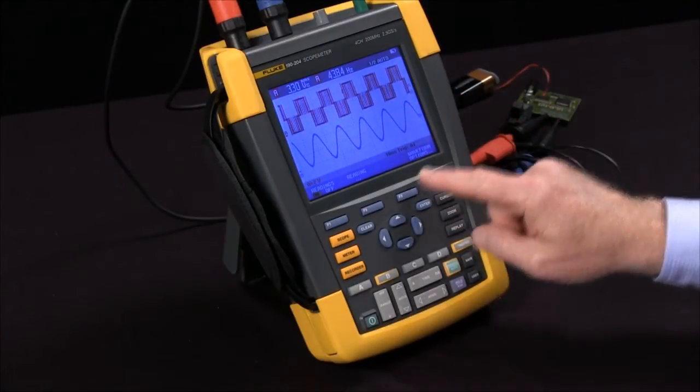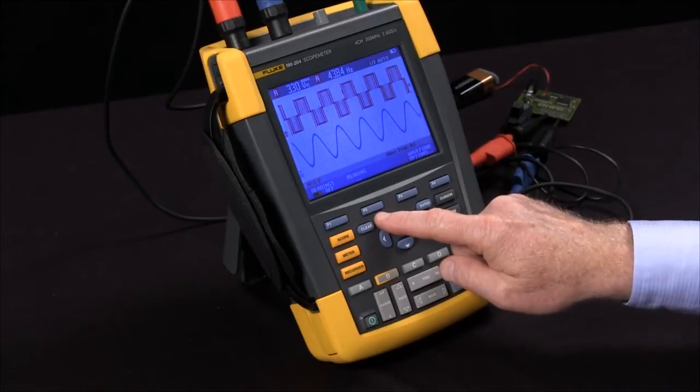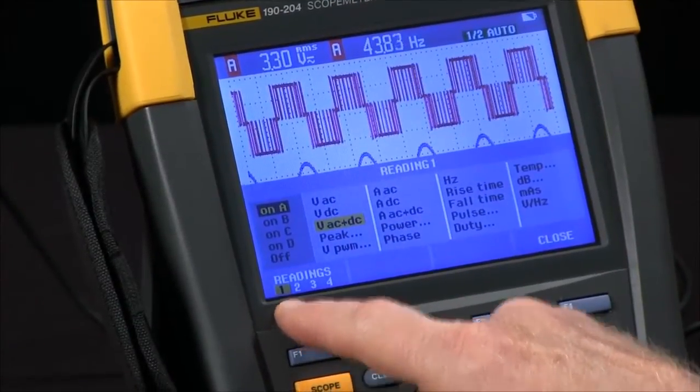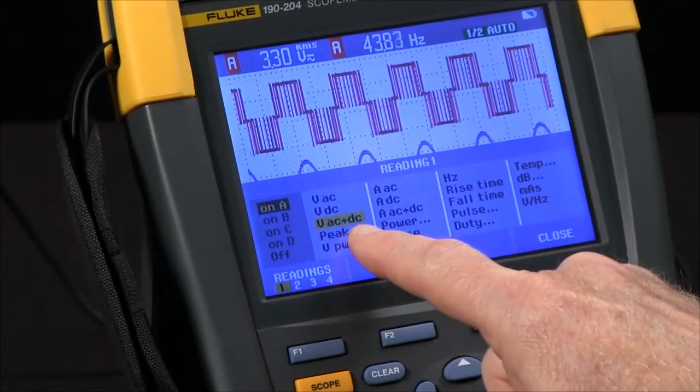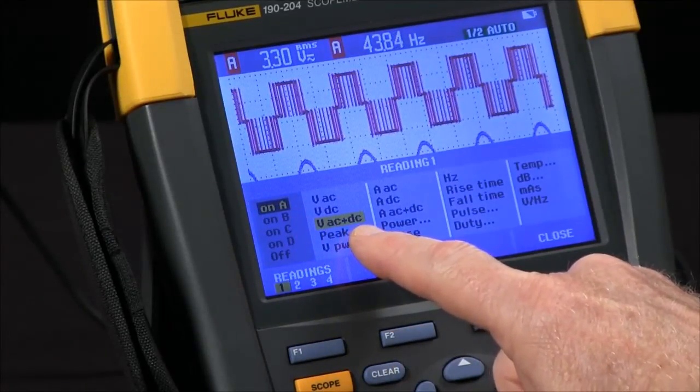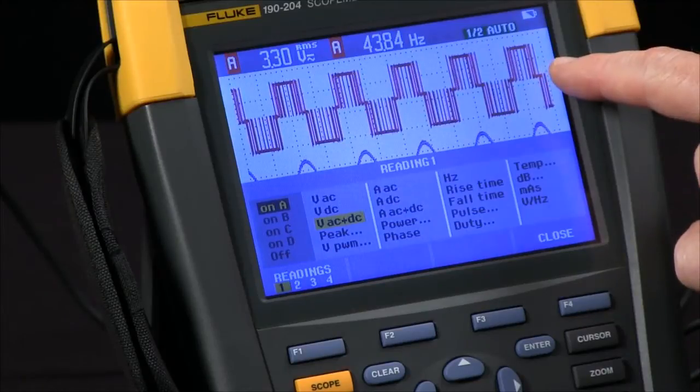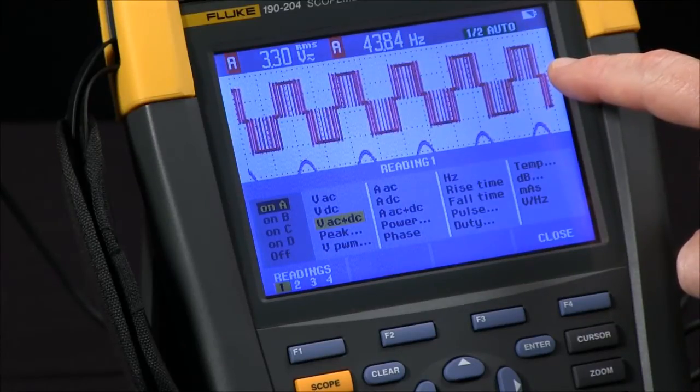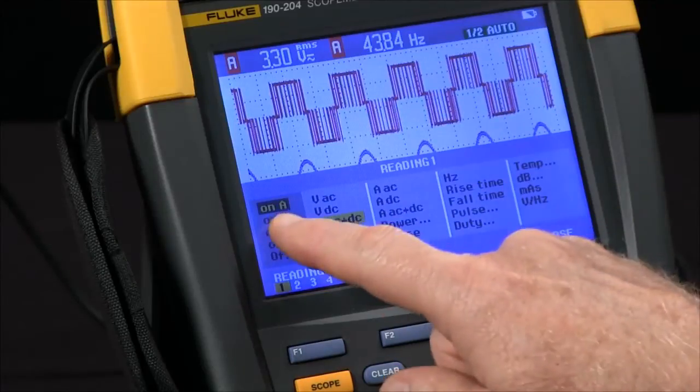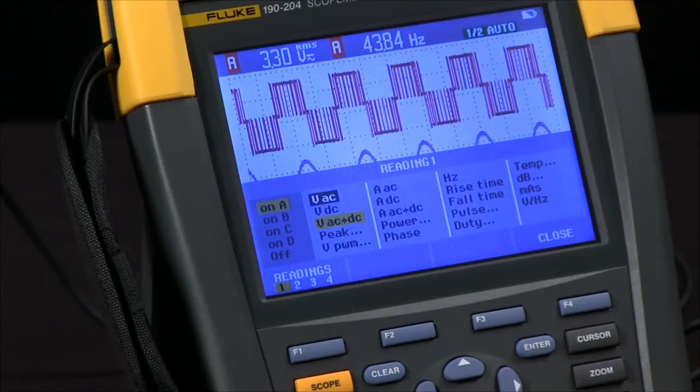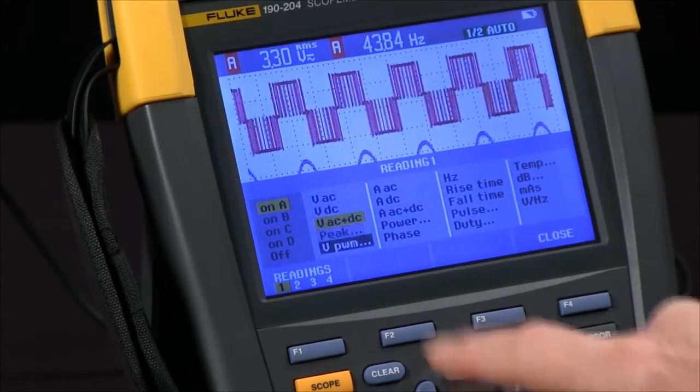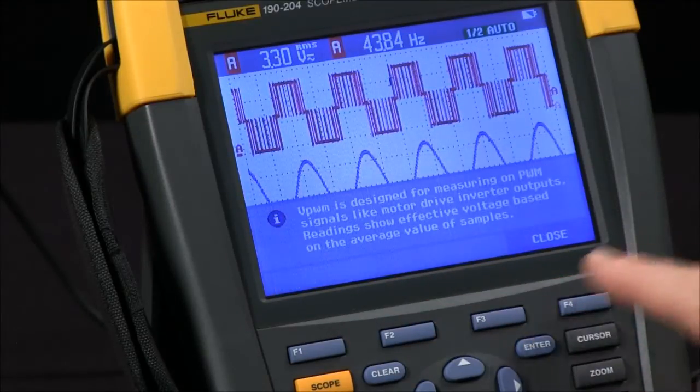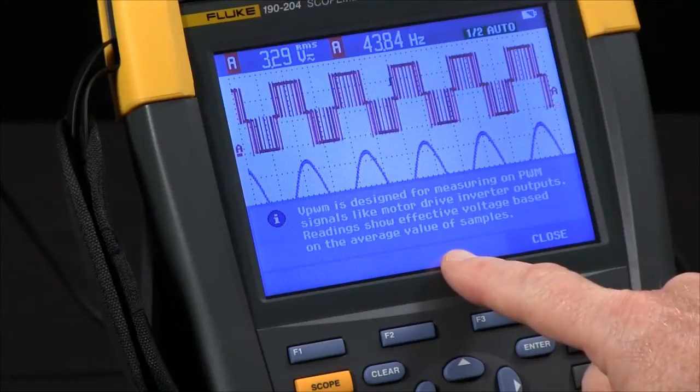To modify those I hit the F2 button for readings. Right now reading one is on channel A reading volts AC and DC. I want to measure VPWM for this since it's a variable frequency drive signal, pulse width modulation. I'll use the arrows to move channel A, highlight VPWM, hit enter. It describes the measurement for motor drive inverter outputs.